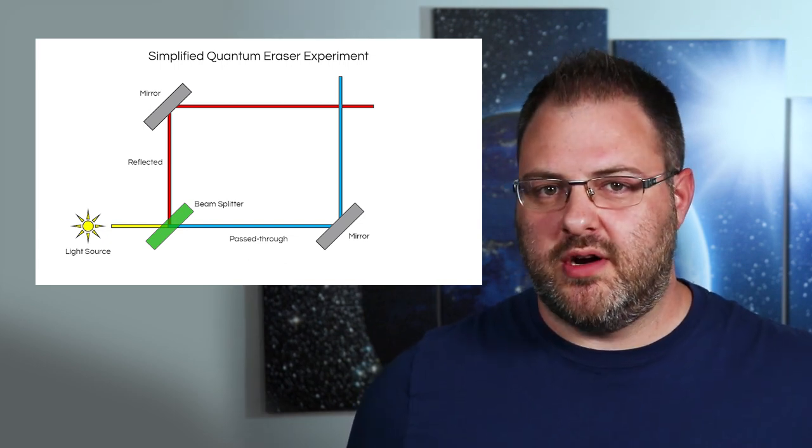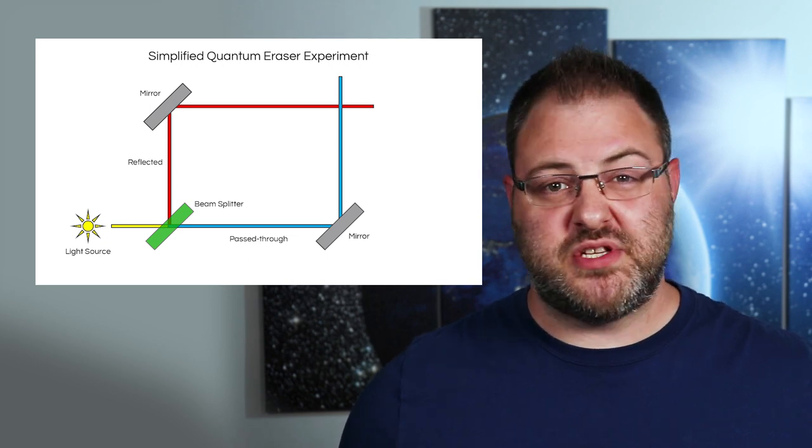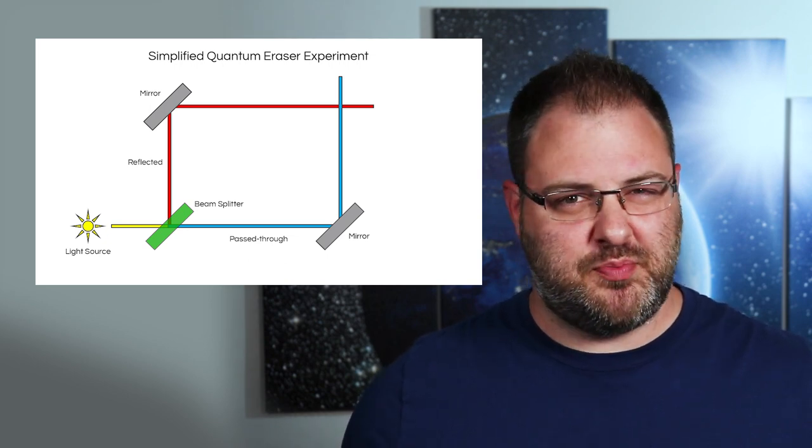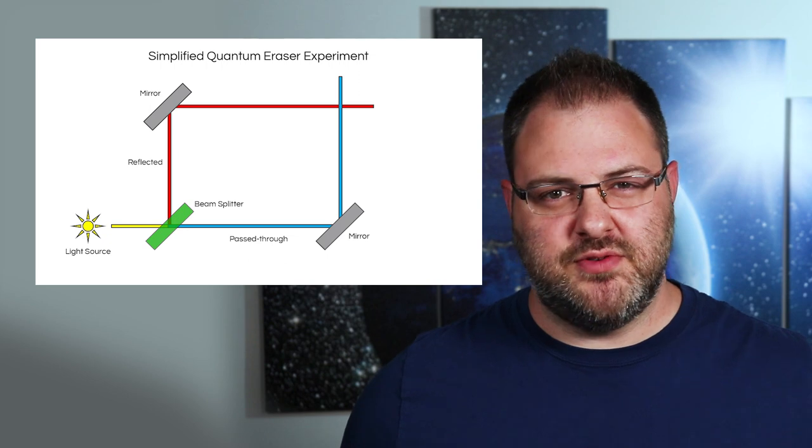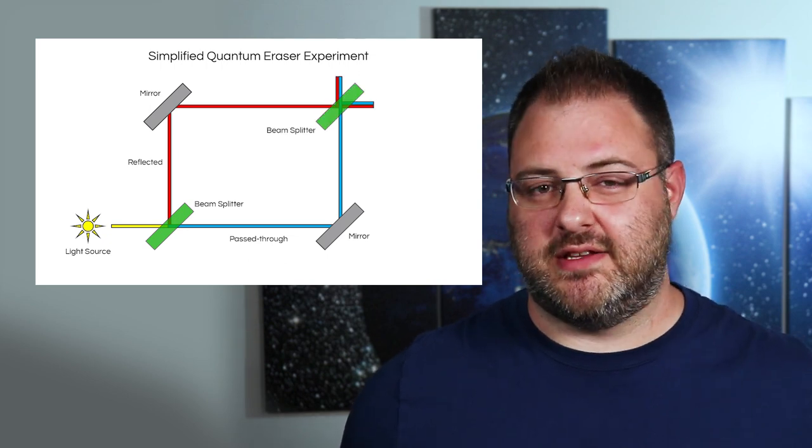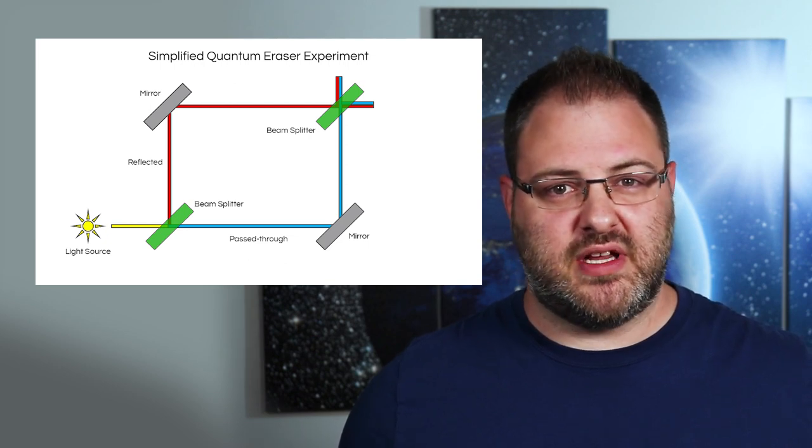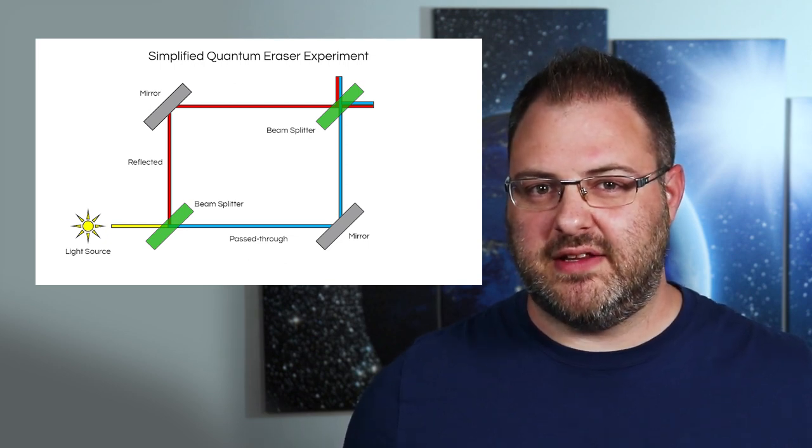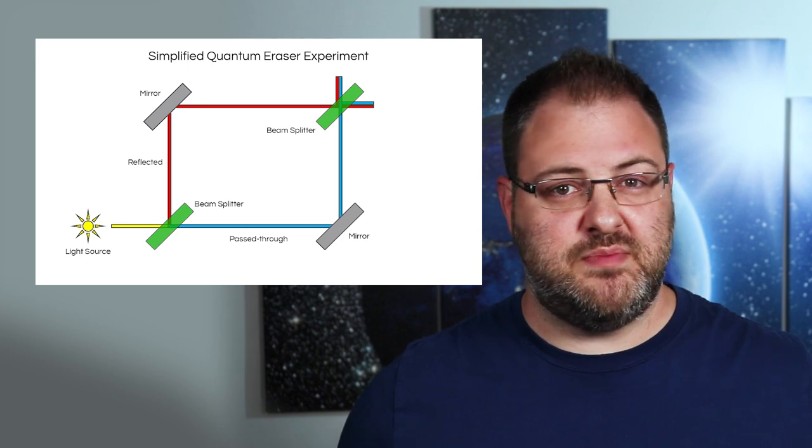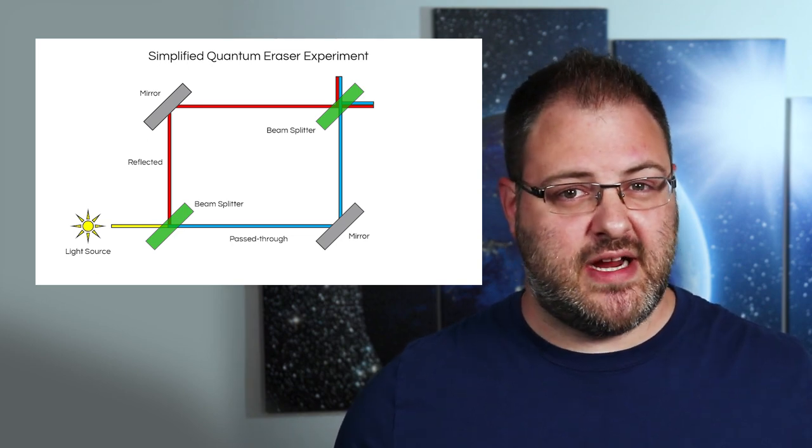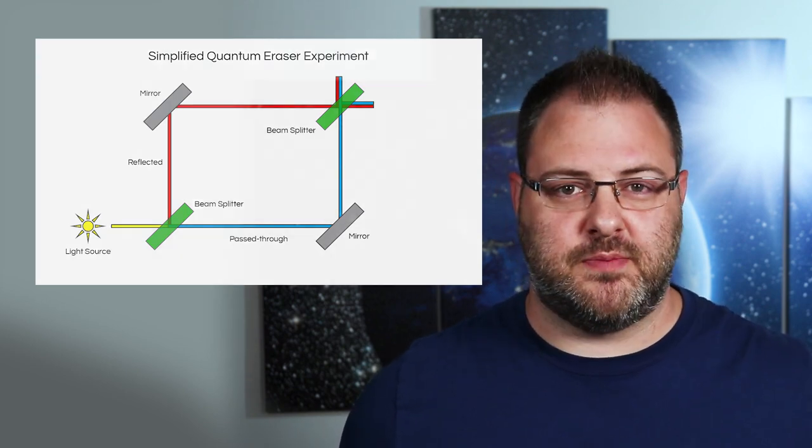The quantum eraser part of this experiment happens when we scramble or obscure this information of which path the photons took by using another beam splitter at that intersection. Now we can no longer conclude which path the photons took because they could all either be reflected or have went through the last beam splitter, essentially erasing the which way information. So now that you have a grasp of how we can erase the information of which path the photons took, let's take a look at how the actual quantum eraser experiment is set up.